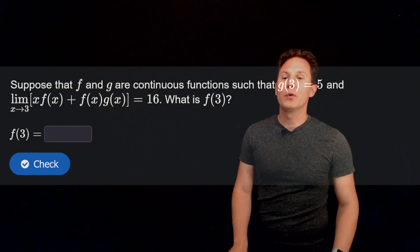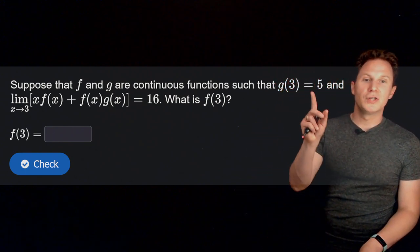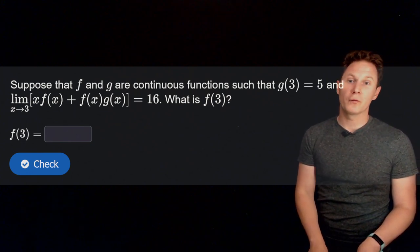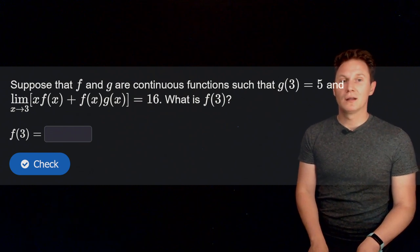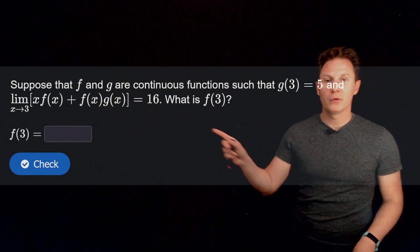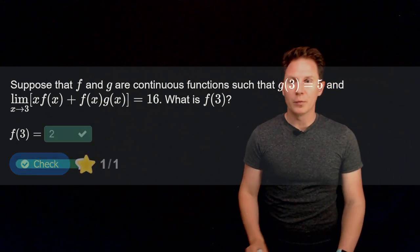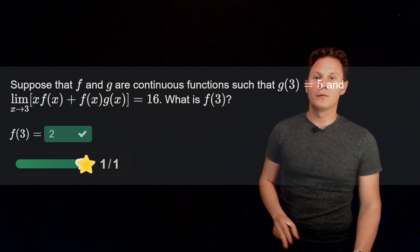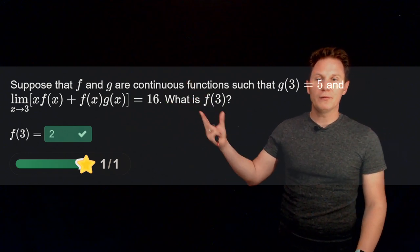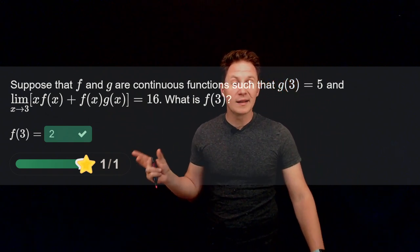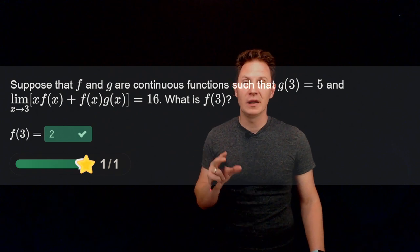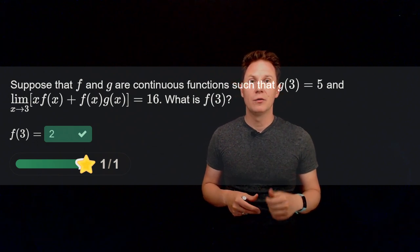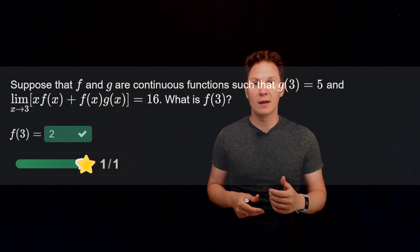Last question. Suppose that f and g are continuous functions such that g of 3 equals 5, and the limit as x approaches 3 of x times f of x plus f of x times g of x equals 16. What is the value f of 3 then? Pause the video and input your answer in the box. Hope you paused it and have inputted 2. So you can obtain this value by using the limit laws and continuity of these functions to get on the left hand side, break it up and to get 3 times f of 3, plus f of 3 times 5, so that's 8 times f of 3 equals 16. Dividing by 8, you get f of 3 equals 16 over 8 equals 2.